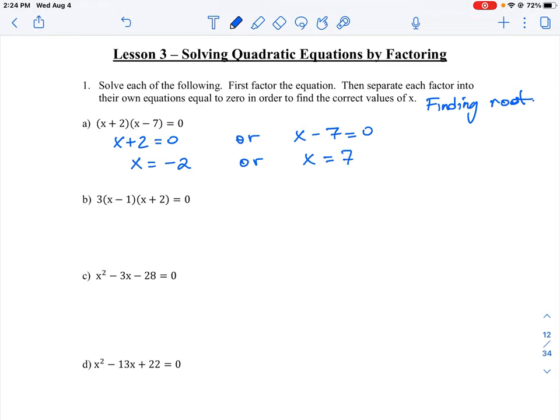So either of these solutions, minus two or plus seven, will work when we substitute them in to the original equation for x, because one of those numbers is going to create a zero in that expression.